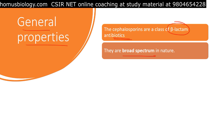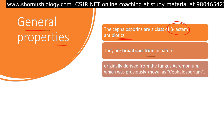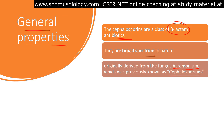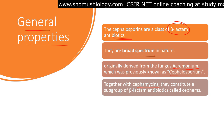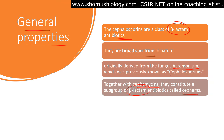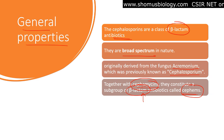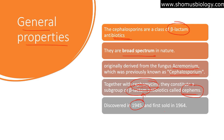Doctors use cephalosporins more often nowadays because penicillin-class antibiotics are becoming resistant. Cephalosporins were originally derived from the fungus Acremonium, previously known as Cephalosporium — hence the name cephalosporin. Together with cephalomycins, they constitute a subgroup of beta-lactam antibiotics called cephem. Their mechanism of action is to inhibit the synthesis of the cell wall peptidoglycan structure. Discovered in 1945 and first sold in 1964.